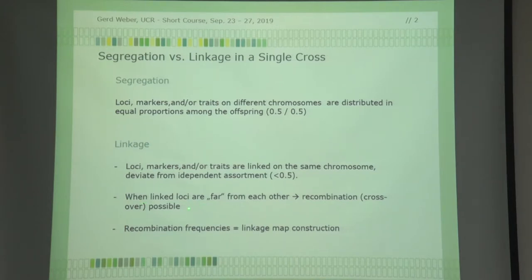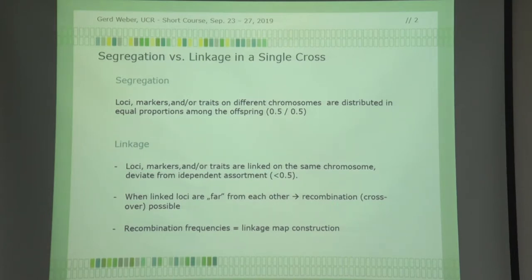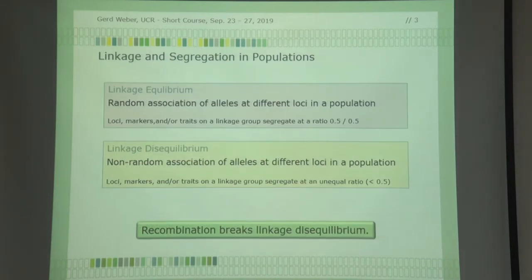Linkage, on the other hand, is when markers segregate together — the segregation frequency is less than 0.5. If something is on the same chromosome physically, it will probably go into the offspring together on that chromosome. We also learned that loci on a linkage group, when they are far apart recombinationally — meaning there is the possibility of recombination — they separate. Crossing over is what you see in the microscope, and we use recombination frequency to construct linkage maps.